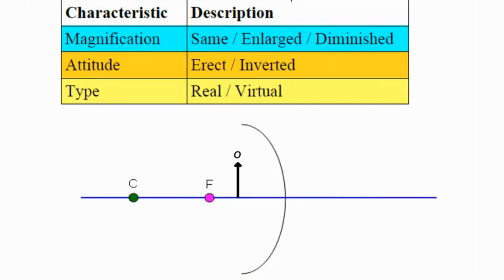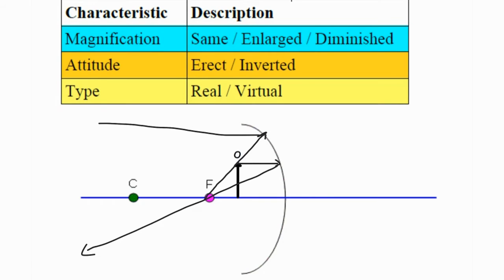Whenever we do these types of questions there are three characteristics we'll be asked to identify. The first is the magnification: is it the same, larger, or smaller? The second is the attitude of the image: is it upright or inverted? The third is the type: is it real or virtual? Those are the three ways we're going to classify the image.